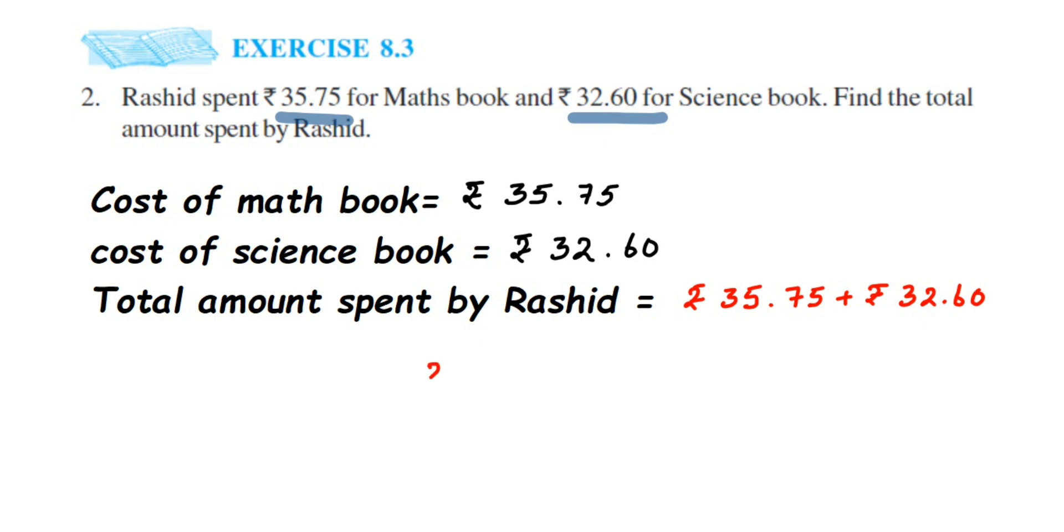The first number is 35.75. In the lineup method, we're going to place the decimal one below the other. The second number is 32.60. We have to put the decimal one below the other. It's called lineup method.